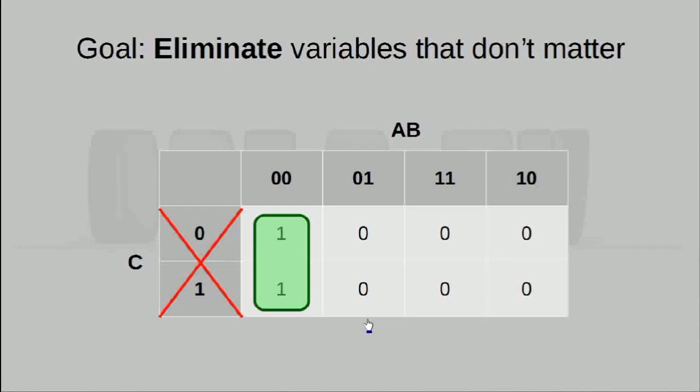Now there are some intricacies behind deciding on what groups you can choose, what groups you cannot choose, which is why we're going to look at it as a set of rules. But while we are going through those rules, just always bear in mind the end goal of actually getting these groups in the first place, and that is to eliminate variables that don't matter. So just keep that in mind.